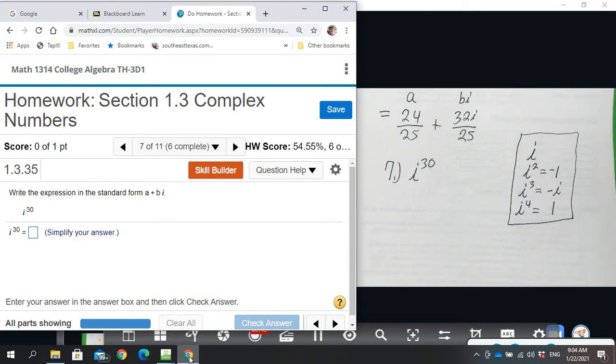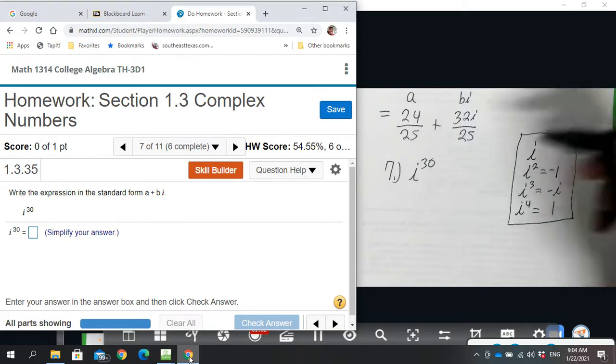Our remainder is going to tell us which one of these we're dealing with. You don't have to count one, two, three, four, five, six, seven, eight, nine, ten until you get to thirty. You could, but there's a quick way to do it.